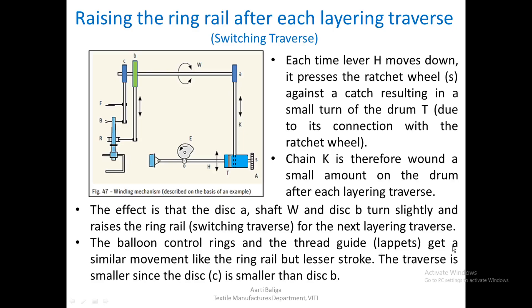The balloon control rings and thread guides (lappets) also get a similar movement to the ring rail but with a lesser stroke. Disc B gives the ring rail its motion, while disc C gives the up-and-down motion to the lappets and balloon control rings. The traverse length for the lappets and balloon control rings is lesser than that of the ring rail, achieved because disc C is smaller than disc B.